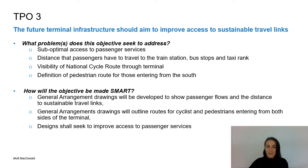TPO3 relates to the provision of improved access to sustainable travel links. This TPO aims to address the current access to the passenger service, the sub-optimal distance that passengers have to travel to reach onward connections, the sub-optimal visibility of National Cycle Route 75 through the terminal, and the definition of the pedestrian route for those entering the terminal from the south.